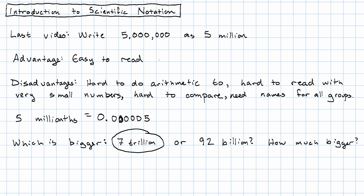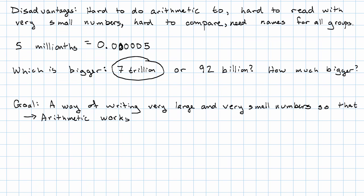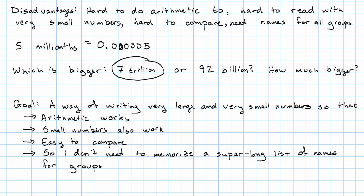Because of all those disadvantages, we want to find another way of writing very large and very small numbers. So that I can do arithmetic, so that small numbers also work, so that the numbers are easy to compare. And finally, so I don't need to memorize a super long list of names for groups.